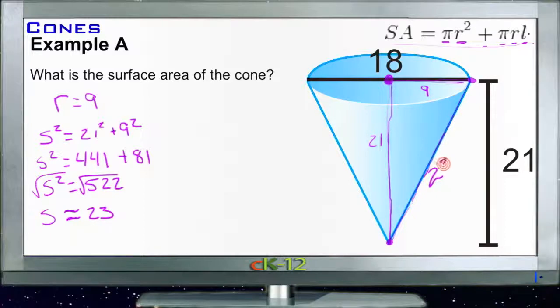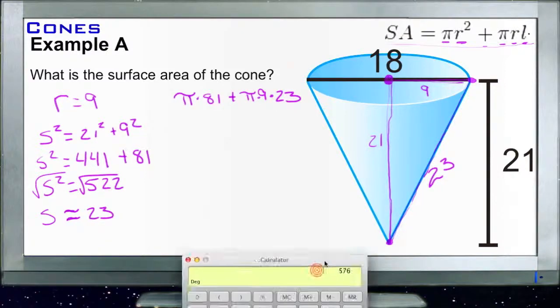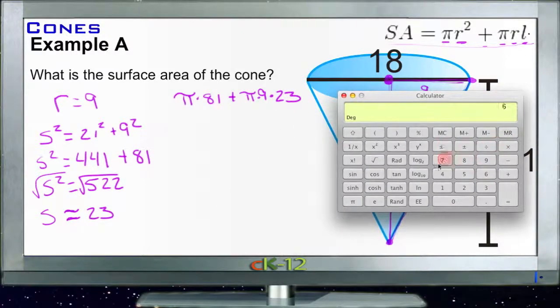That means we can plug that into our formula. Now we have pi times r squared, so pi times 81, plus pi times r, so pi times 9, times our lateral length 23. Now we just need to run all that through our calculator.